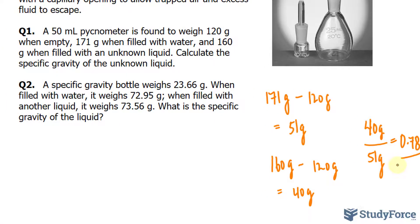Let's do one more example for good measure. A specific gravity bottle weighs 23.66 grams. When filled with water, it weighs 72.95 grams. When filled with another liquid, it weighs 73.56 grams. What is the specific gravity of the liquid?